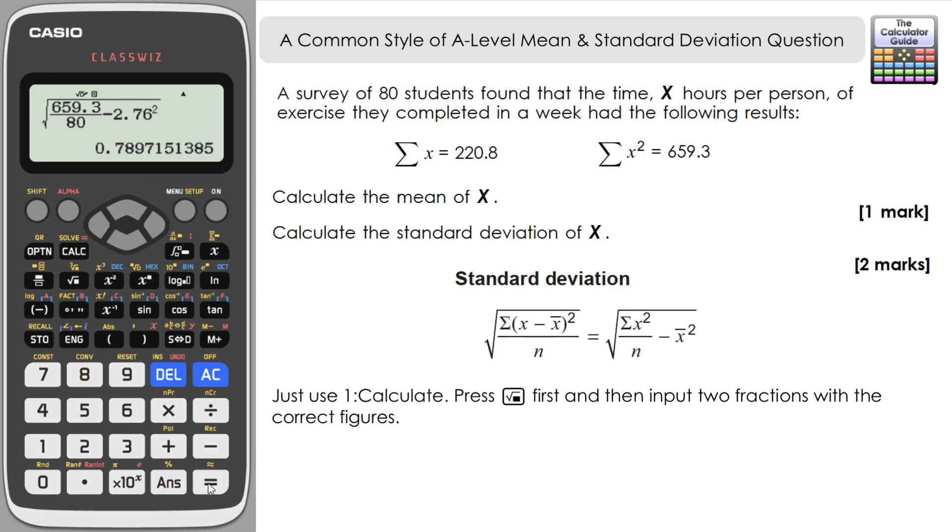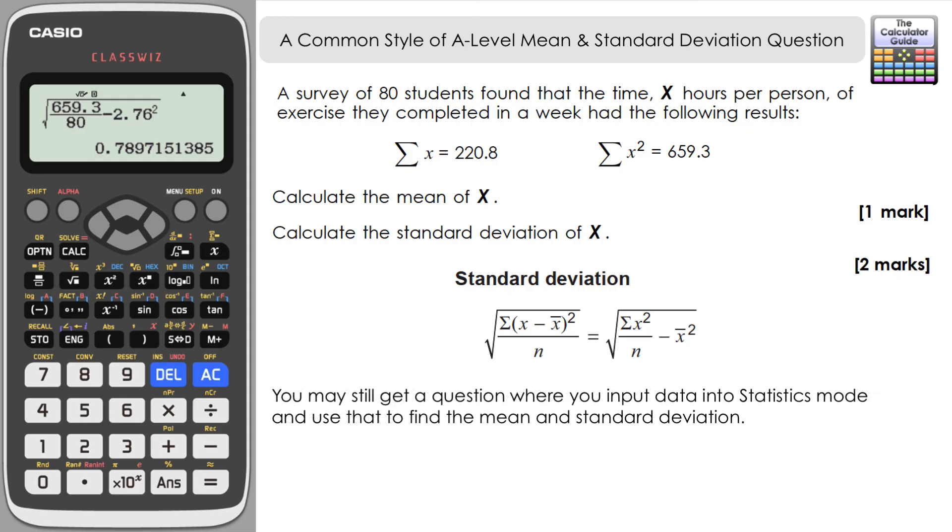Press equals and here we have a standard deviation: 0.79 to two decimal places. So there we go, not too difficult to get those three marks if you get such a question in the A-Level exam. Bear in mind that you may be given the summary statistic sum of x minus x bar all squared. That sometimes comes up, but again you can just use that variation of the formula if you get given that one instead.